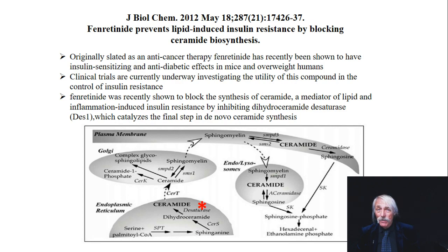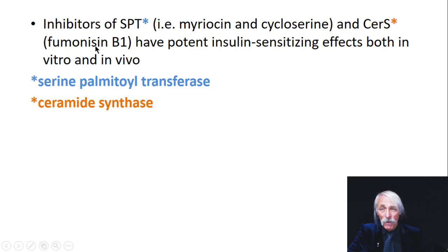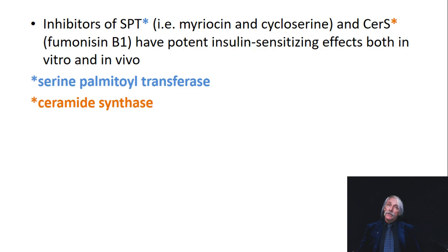Inhibitors of serine palmitoyltransferase — myriocin and cycloserine — and ceramide synthase — fumonisin B1 — have potent insulin-sensitizing effects both in vitro and in vivo. We're blocking ceramide biosynthesis by those two pathways. When you do that, you decrease damage to the mitochondria, increase the amount of mitochondria pumping electrons through, decrease reactive oxygen species, and have a more healthy muscle cell.